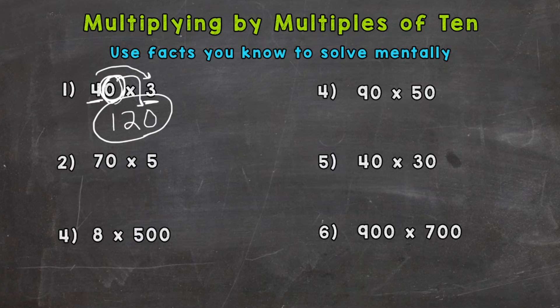Let's go to number two. We have 70 times 5. Do we see a fact we know? Yeah, 7 times 5. 7 times 5 is 35. Obviously that's not the answer to 70 times 5. We still need to use this 0 to push the 3 and the 5 to the correct places, so we put the one 0 on the end: 70 times 5 is 350.